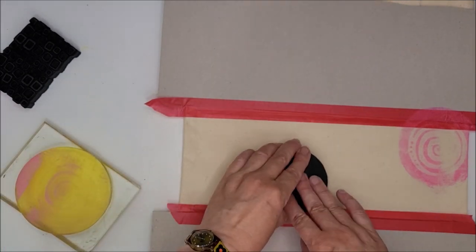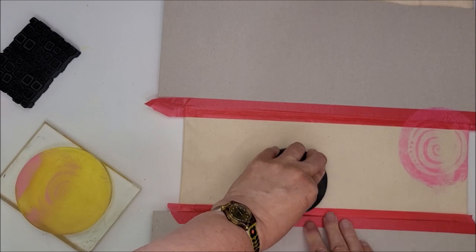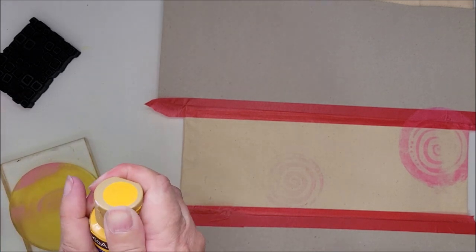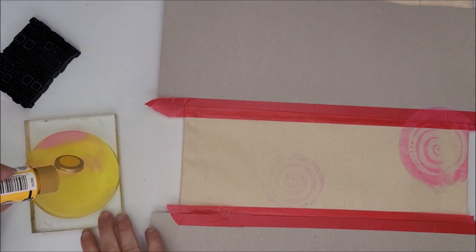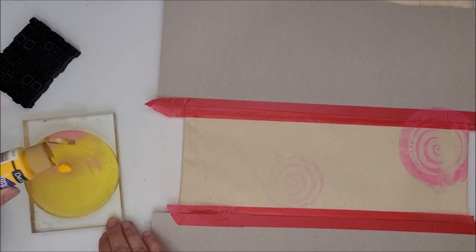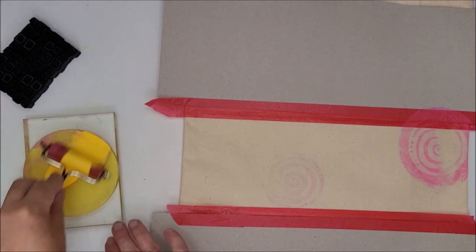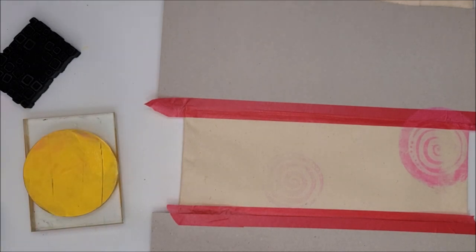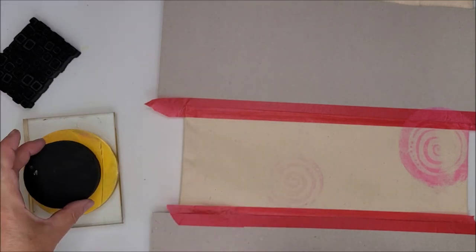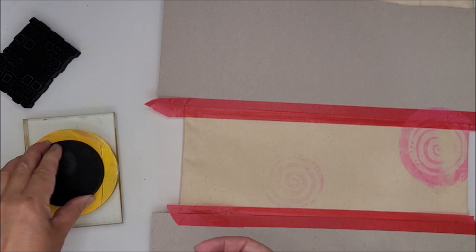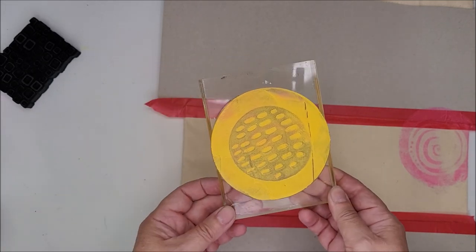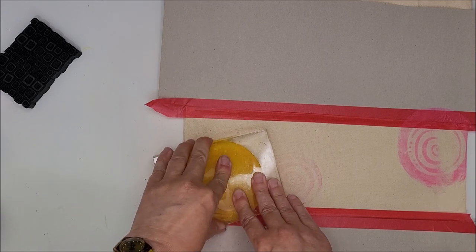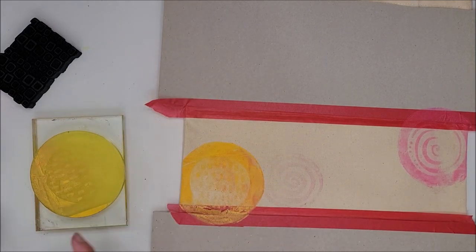I can then take this stamp and transfer a little of the paint that's on there. I'm just going to continue adding paint to my plate, taking one of the Art Foamies stamps, creating a pattern, and transferring the paint onto my tote bag.